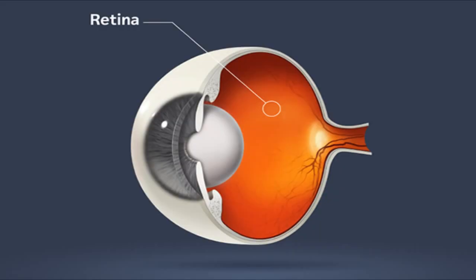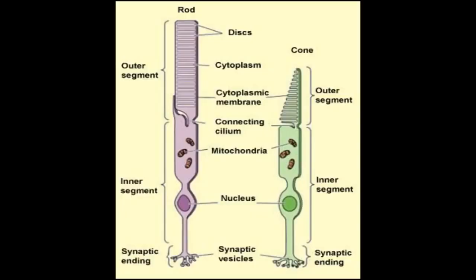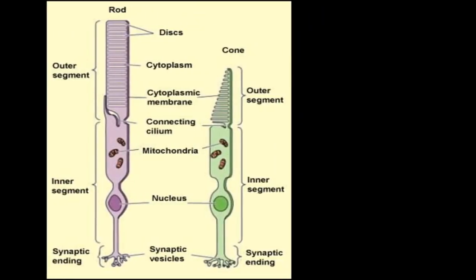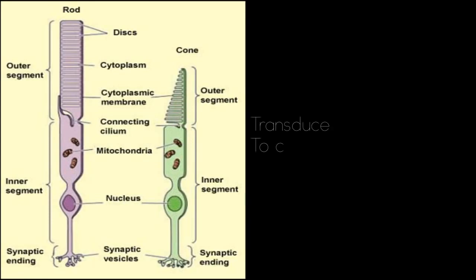At the back of the eye there is the retina. This is where the photocells are. They come in two basic types: rod cells and cone cells, both of which transduce light energy into an electrical impulse.